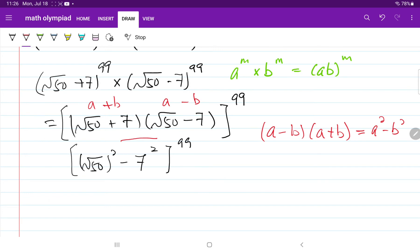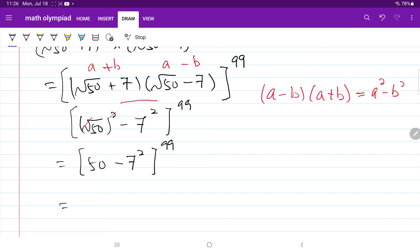On this part right here, the square root and the square will cancel each other. So now we have 50 minus 7 squared to the power of 99. And 7 squared is equal to 49, so the equation becomes 50 minus 49 to the power of 99, which is equal to 1 to the power of 99, which equals 1.